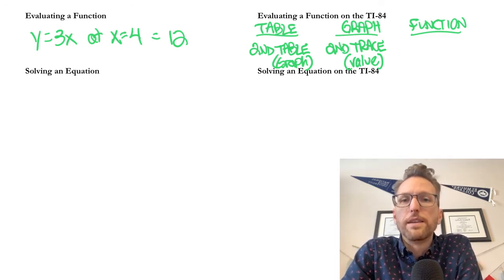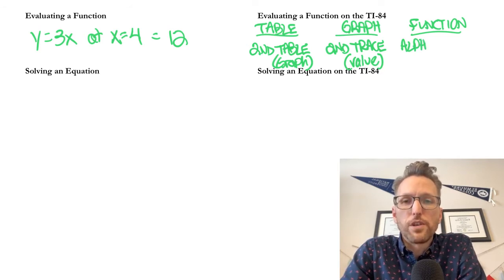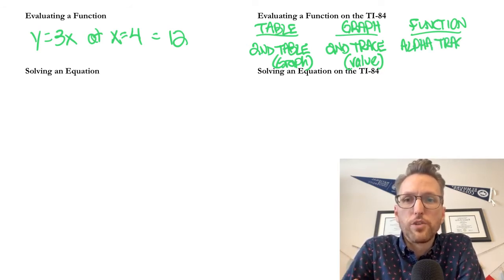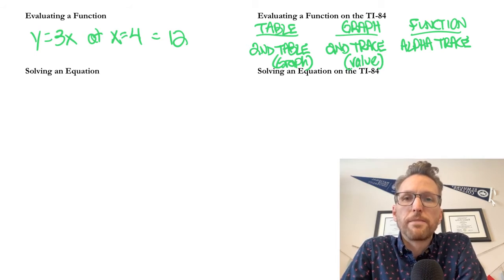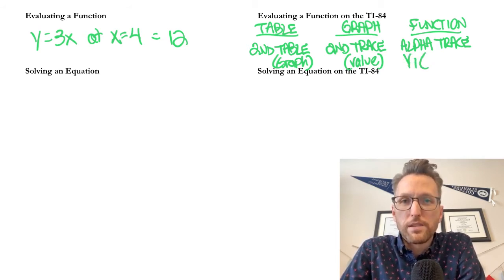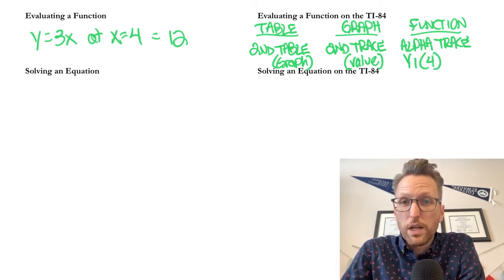Pretty cool. And then you could see it on the graph. The third way, which is the function notation. And these are the three ways that I talked about earlier. Numerical, graphical, and function. Is on your main screen and you press alpha trace. And you could, so it's a shortcut, alpha trace.